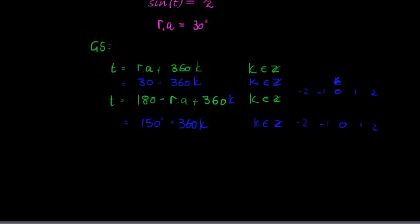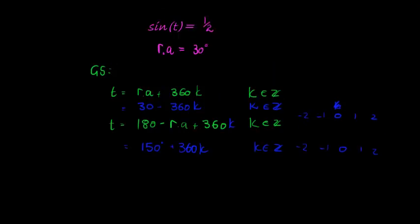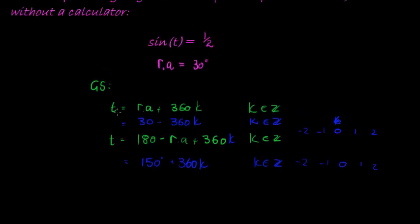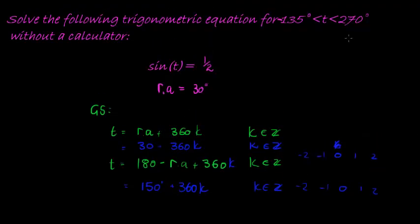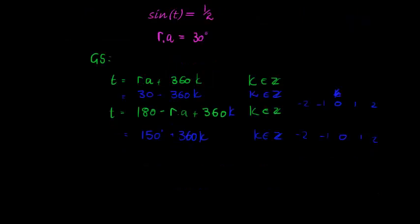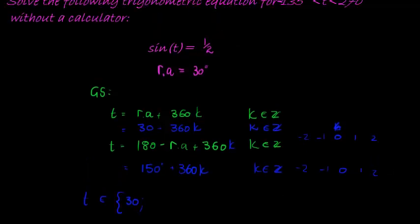So let's start with 0. If in the first solution we make k equal to 0, in other words, we're not adding any period at all, then I just have 30 degrees. Does 30 degrees fall in there? Yes, so in other words, t is an element of, and now I'm going to write out a set of solutions. So it's either 30 degrees.